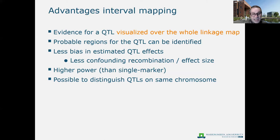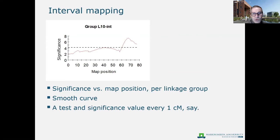The result is a plot where we plot significance against map position, and we see peaks that indicate QTLs. We get a very smooth curve along the linkage group because we can now test significance at every centimorgan.